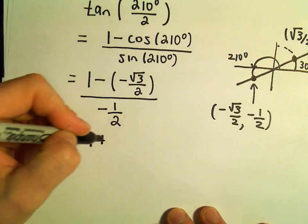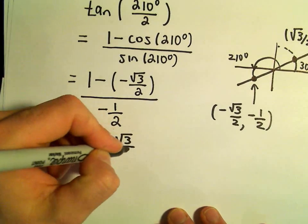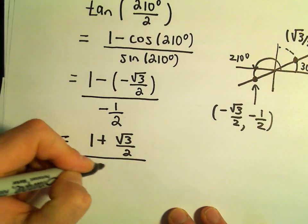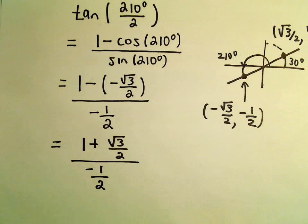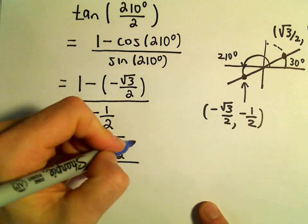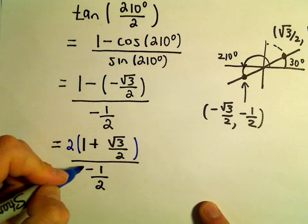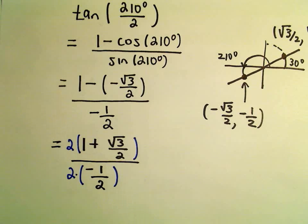So, let's see, in the numerator, we'll just be left with 1 plus root 3 over 2. In the denominator, we have our negative 1 half. I think I would do the same thing as before, just get rid of the denominators, the 2s. I would multiply the numerator by 2, and the denominator also by 2.